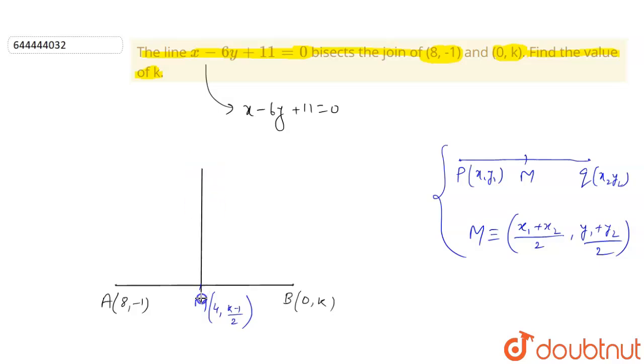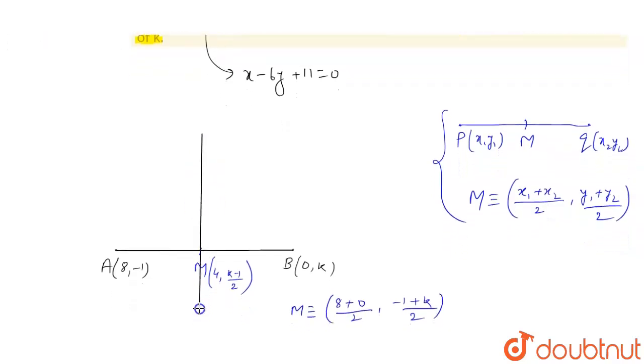passes through point M, because M is the midpoint of this line segment. If this line passes through point M, then the coordinates of M will satisfy this equation. Let's substitute and satisfy it.